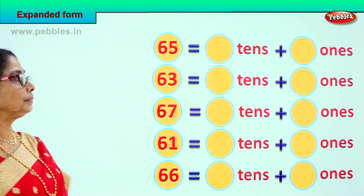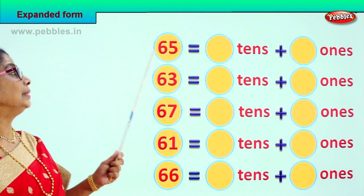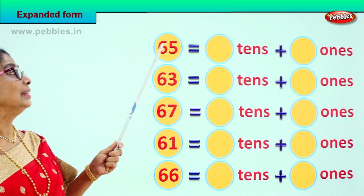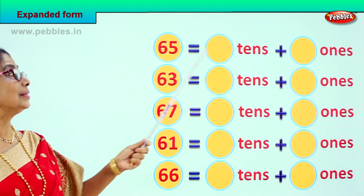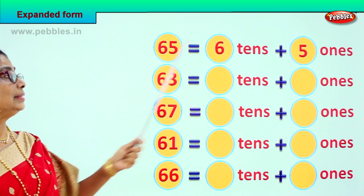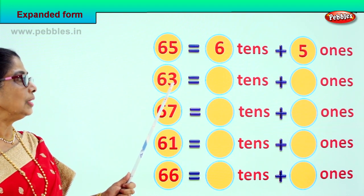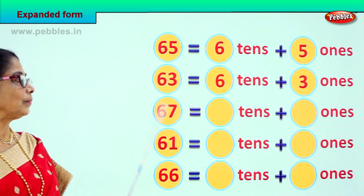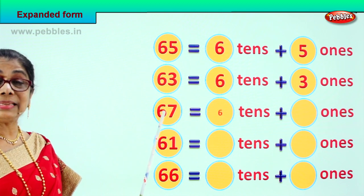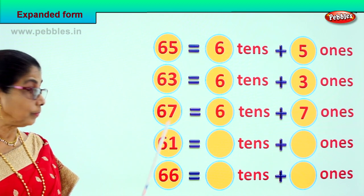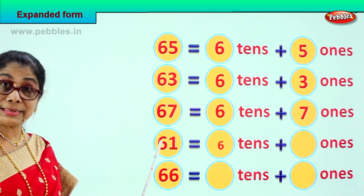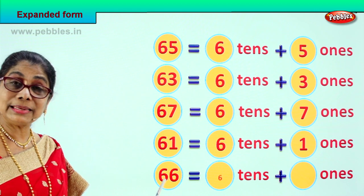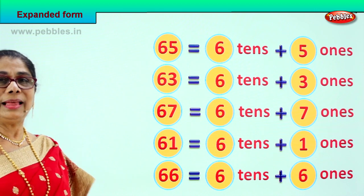Let's take another set of numbers. The first number is 65. How many tens? How many ones? 6 tens plus 5 ones. 63 is equal to 6 tens plus 3 ones. And 67 is equal to 6 tens plus 7 ones. 61 is equal to 6 tens plus 1 one. 66 is equal to 6 tens plus 6 ones.